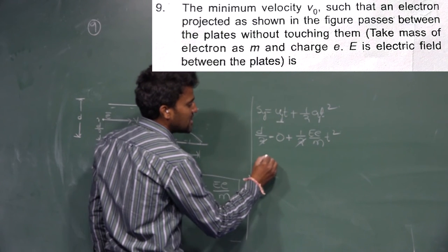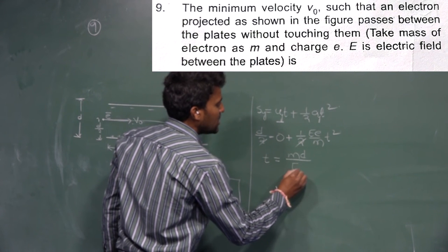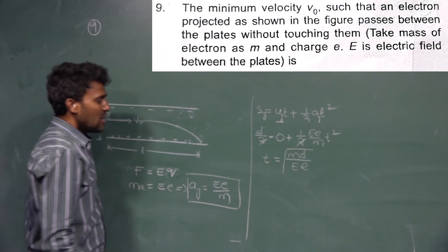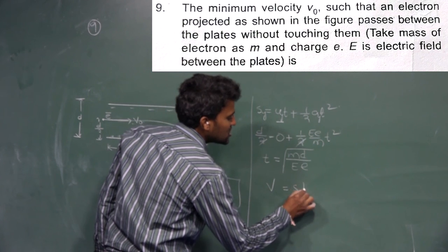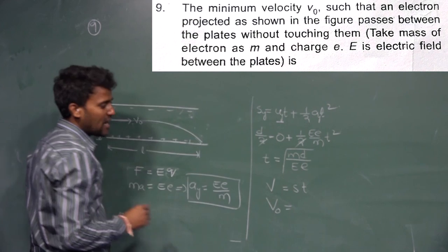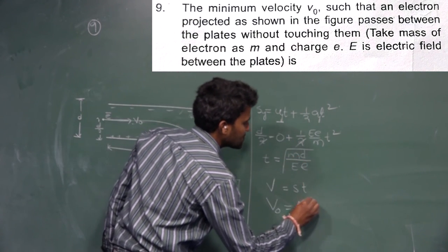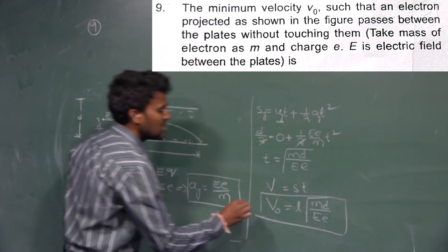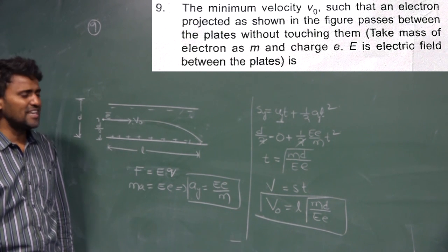Solving for time: T = √(MD / eE). Now, velocity equals distance divided by time. Along the horizontal direction, distance is L, so the minimum velocity V0 = L × √(M / (eE × D)), which simplifies to L × √(M / eED).